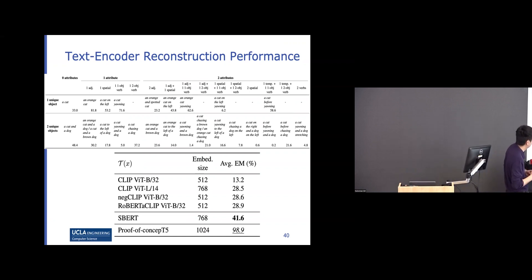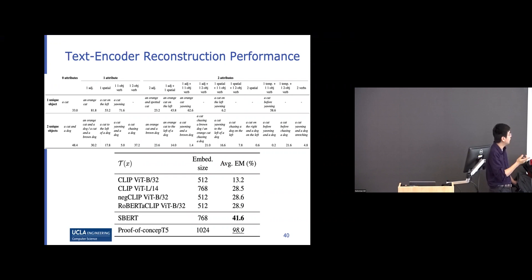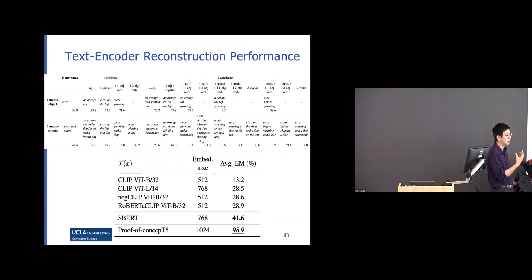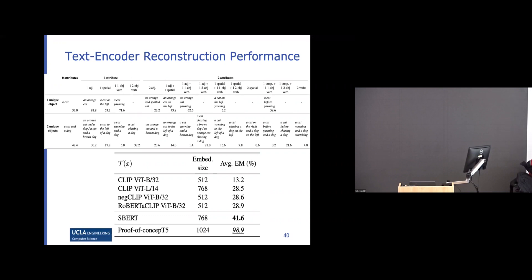An audience member asks whether adding an auxiliary reconstruction loss could improve things — that's a very good question, and something we want to try. This analysis shows that the sentence-level encoding is insufficient to store all the needed information. For example, for an orange cat versus a blue cat, the CLIP embedding often loses color information — the model can't tell which color it was.